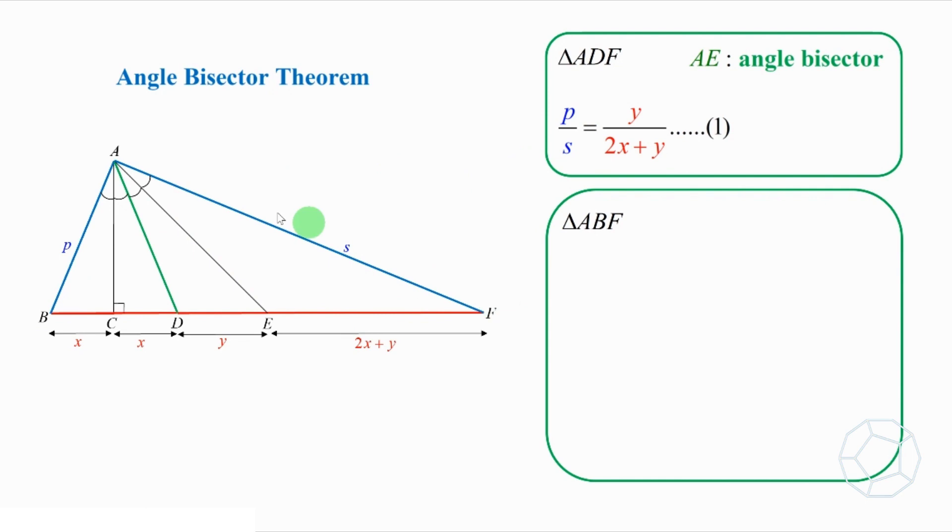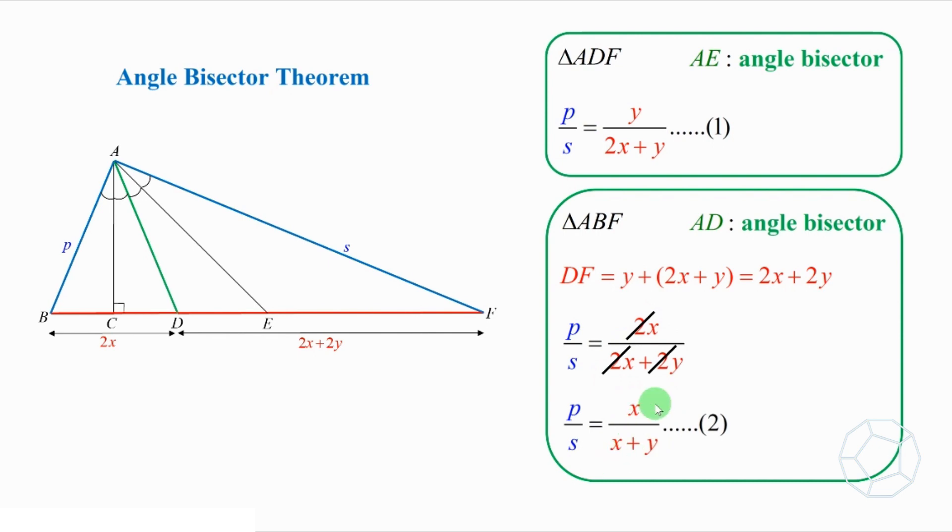In triangle ABF, AD is an angle bisector. Here, DF is equal to Y plus bracket 2X plus Y, which is 2X plus 2Y. And BD is simply X plus X, which is 2X. Therefore, P over S is equal to 2X over 2X plus 2Y. Cancel out the factor 2 in the numerator and the denominator. We'll have P over S equals X over X plus Y. Let's call this equation 2.